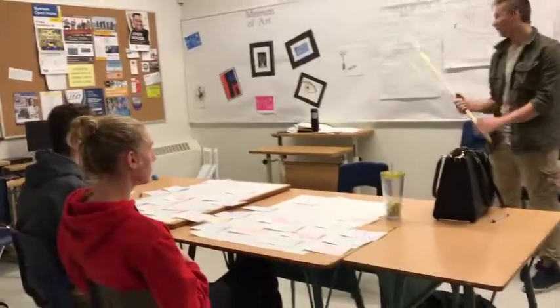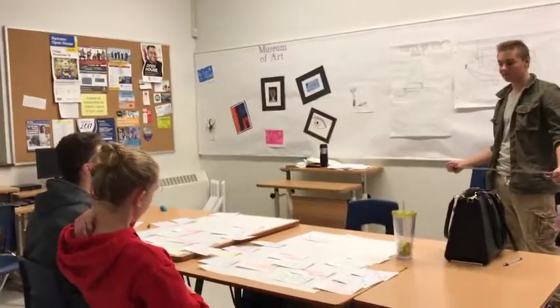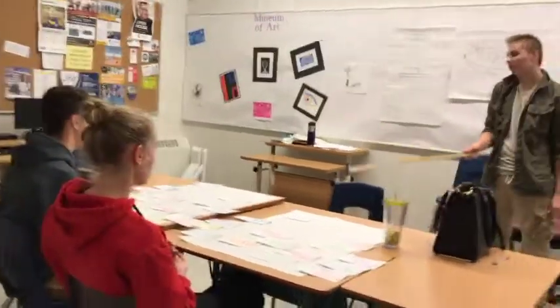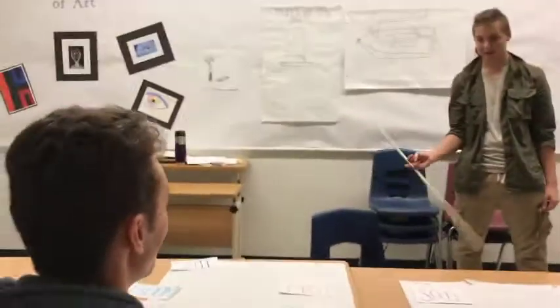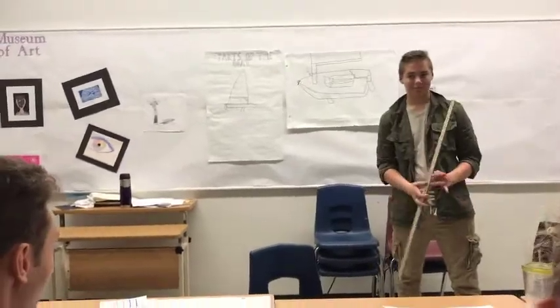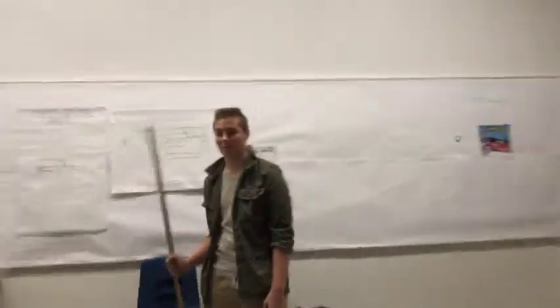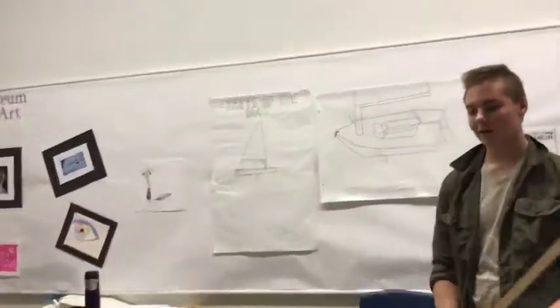Now that we've gone over all the parts of the boat, here are some ways to remember them. For port: left and port have the same number of letters, so left is port. For the dagger board — it looks like a dagger, so that's an easy visual cue. For tiller and tiller extension, they go together naturally.